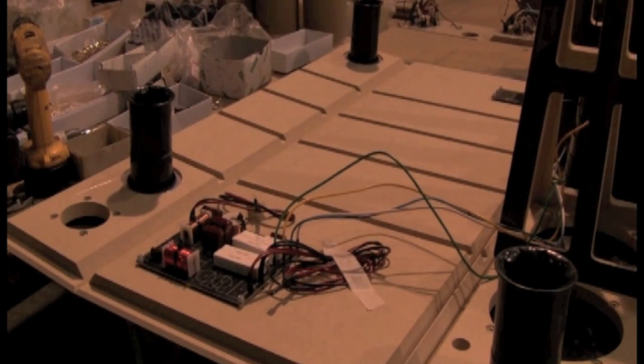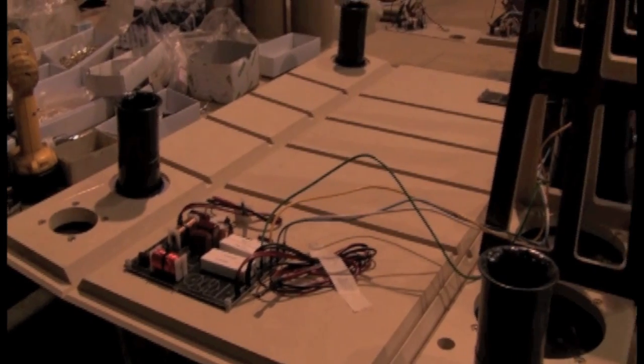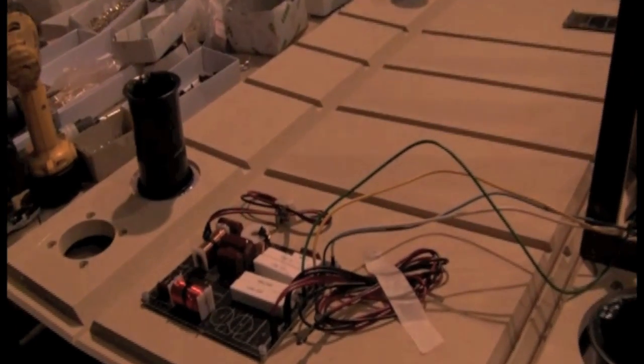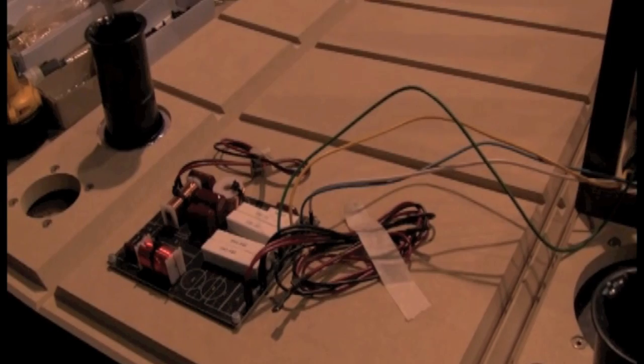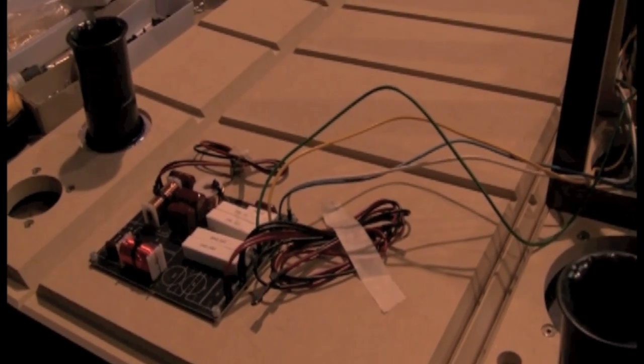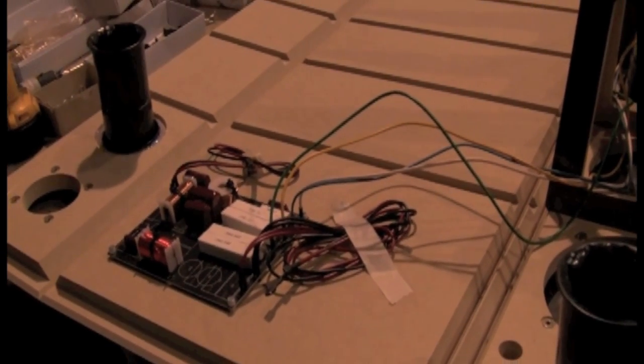So here we can see a view of the crossover network, and all the crossover network does is it's responsible for dividing up the various frequency sections that are going to be reproduced by the tweeter, the midrange, and the woofer sections. One of the reasons that this is critically important is, A,